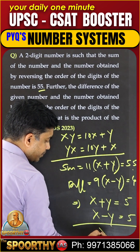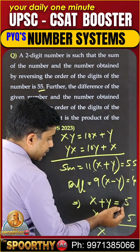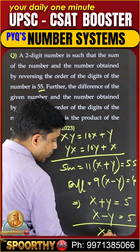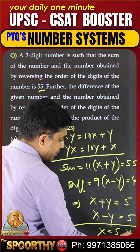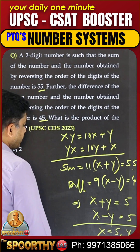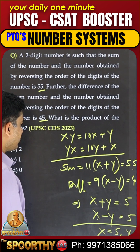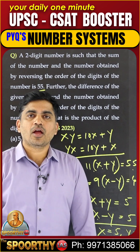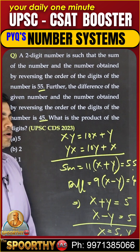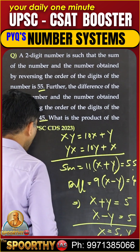What is the x value? Adding the two equations: 2x equals 10, so 10 by 2 means x is 5. What is y? y is equal to 0. So x is 5, y is 0, which means the product is 5 into 0.